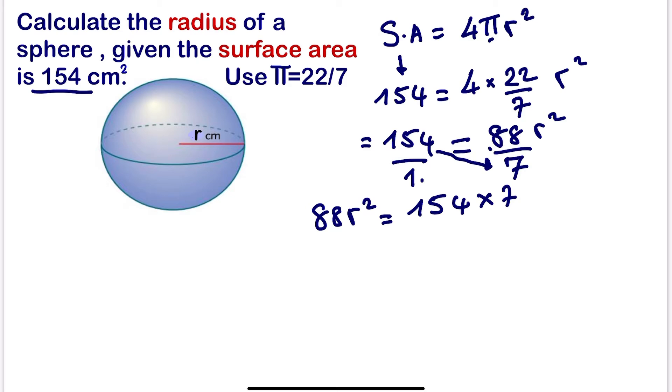So this will give us 88r² should be equals to, if we multiply this, we are going to have 154 times 7 will give us 1078.